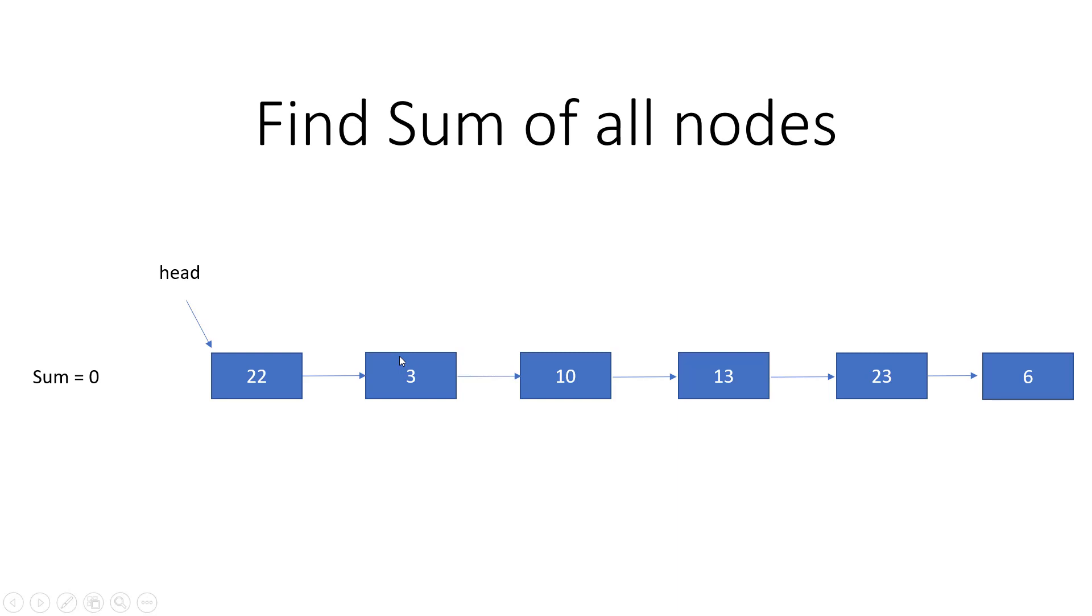We'll check again whether the node is null. If it's still not null, we'll add sum equals sum plus node value, which is 22 plus 3. We'll do this until the node is null, meaning until the end. When the node is null, we'll exit the loop and return the sum.